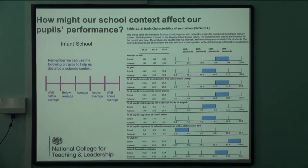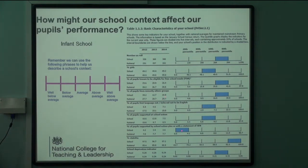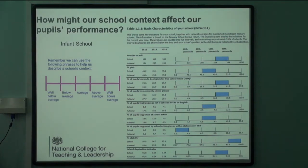In Ofsted terms they're only really interested if you're well below average or well above average — if you're slightly below or slightly above it's not going to make too much of a difference. That was a discussion we had around starting points in the last infant inspection where we were arguing that children's entry point was significantly below average, and the inspection team wouldn't have any of it. The only two key factors for the infant school that are well below or well above are: well below the national in school action or with a statement, and well above in terms of stability.